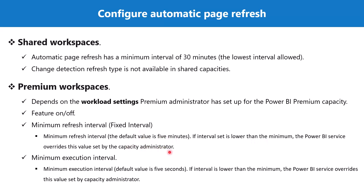So if the Power BI report developer has set a value lower than the capacity administrator's value, the Power BI service overrides it. The same applies for change detection, where the variable is called the minimum execution interval, and its default value is five seconds.